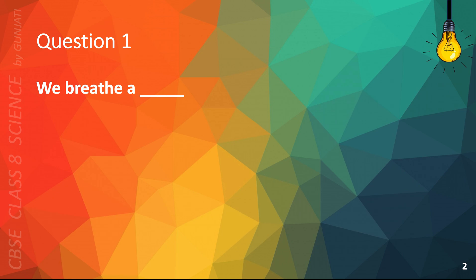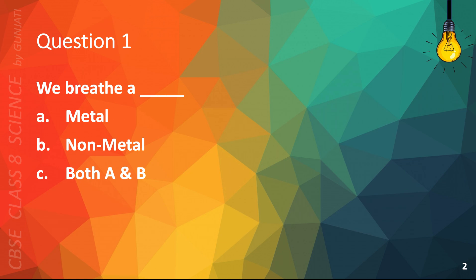Question 1. We breathe — A, metal; B, non-metal; C, both A and B; or D, none of the above. The correct answer is B, non-metal.